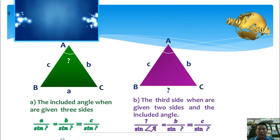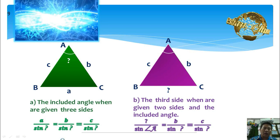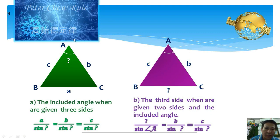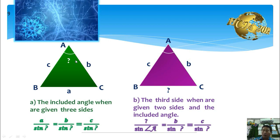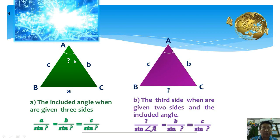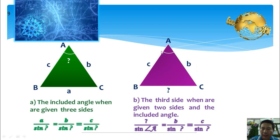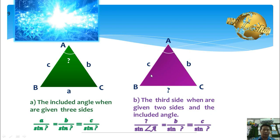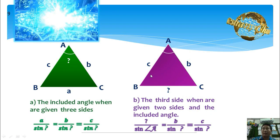However, the sine rule is not suitable to find the included angle when we are given three sides. When we are given three sides A, B, and C, and want to find the included angle A, we cannot use the sine rule. Similarly, to find the third side when given two sides and the included angle — when given B, C, and included angle A — we also cannot use the sine rule. This is because if we use the sine rule, the equation will have two unknowns.